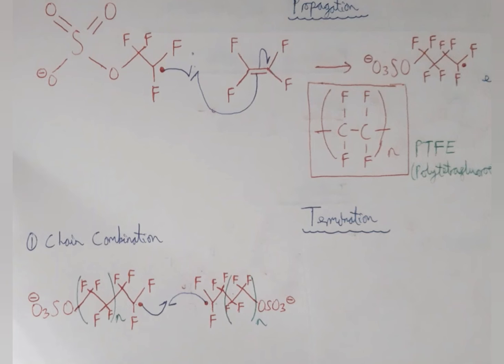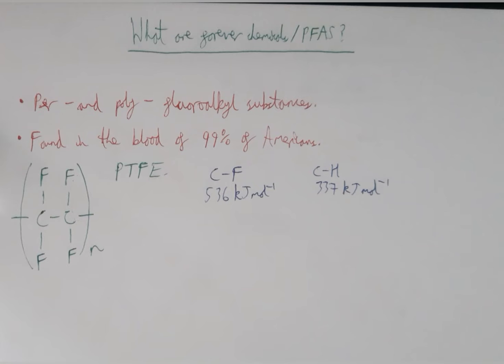Forever chemicals, or PFAS, are perfluoro and polyfluoroalkyl substances. These substances are found in the blood of around 99% of Americans, for reasons we will discuss later in the video.